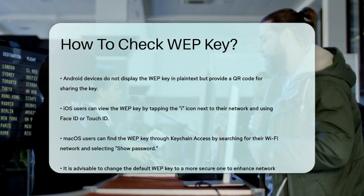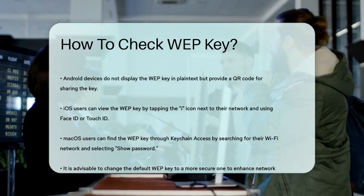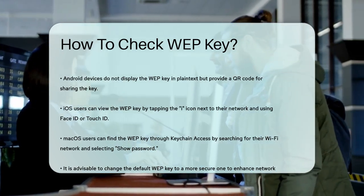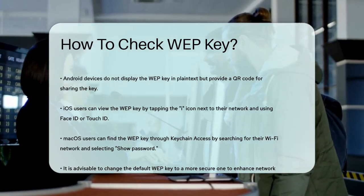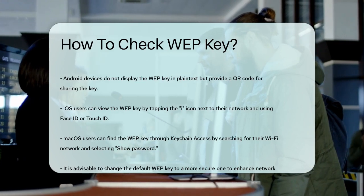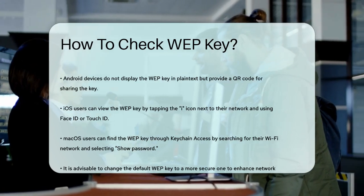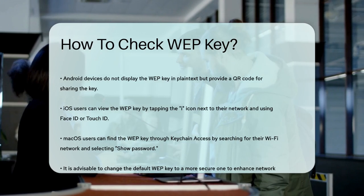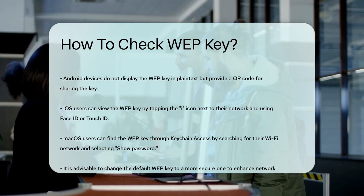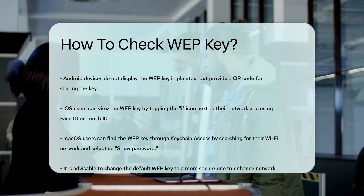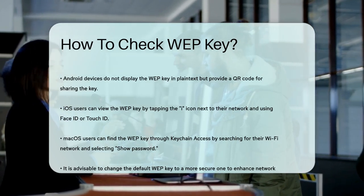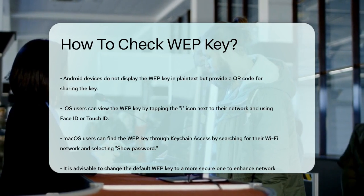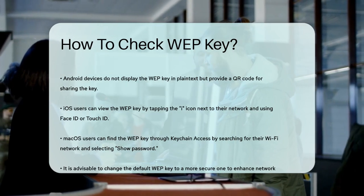On macOS, you can use Keychain Access to find your network security key. Search for Keychain Access, find your Wi-Fi network, and select Show Password after entering your computer password. Remember, it's a good idea to change your default WEP key to something more secure to protect your network from unauthorized access.